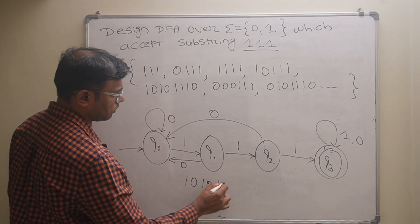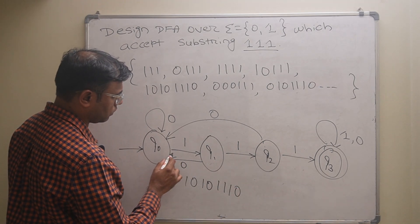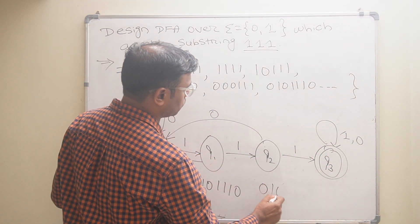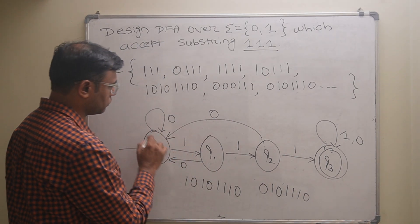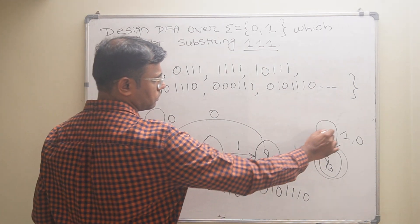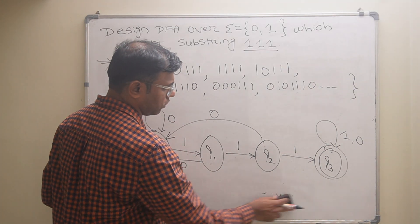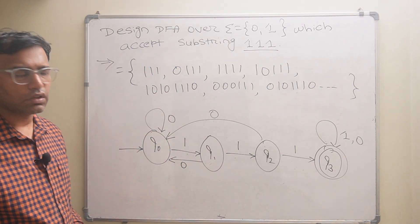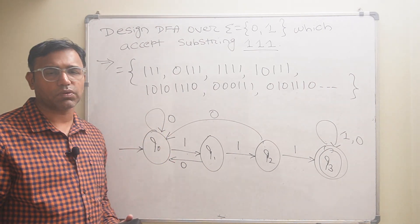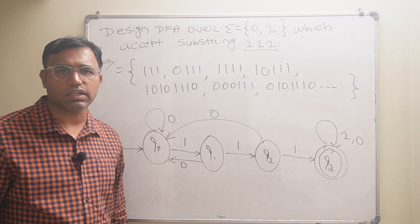Let us verify with a complex string like 101010110111111 0. Tracing through: 1-0-1-1-1-0-1-1-1-0 — all these are accepted. This DFA is now accepting all valid strings containing substring 111. I hope you understand this problem. If you like this video, please subscribe, like, and share. Thank you.